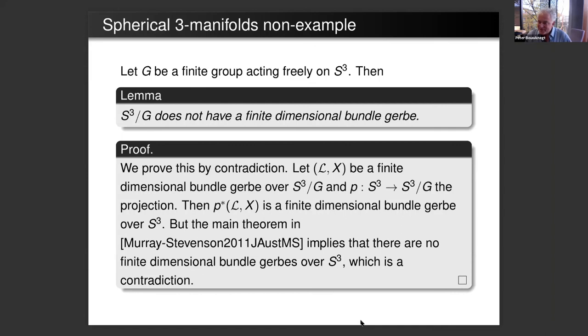Of course the traditional Atiyah-Singer index theorem has lots of applications in quantum field theory. It's very closely related to anomalies in quantum field theory and can be used very effectively to find obstructions to the existence of quantum field theories. Is there any such application here that you can think of? I mean, is this index theory for projective families giving rise to some conditions on certain quantum field theories?